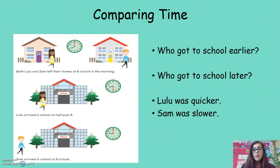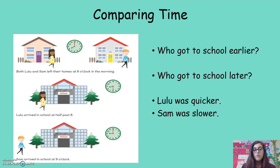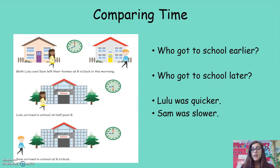We can also compare different times. This is a story about Lulu and Sam. Lulu and Sam left their home at eight o'clock in the morning. Who got to school earlier? Lulu arrived at school at half past eight, and Sam arrived at school at nine o'clock. Lulu arrived at school earlier because half past eight comes before nine o'clock.